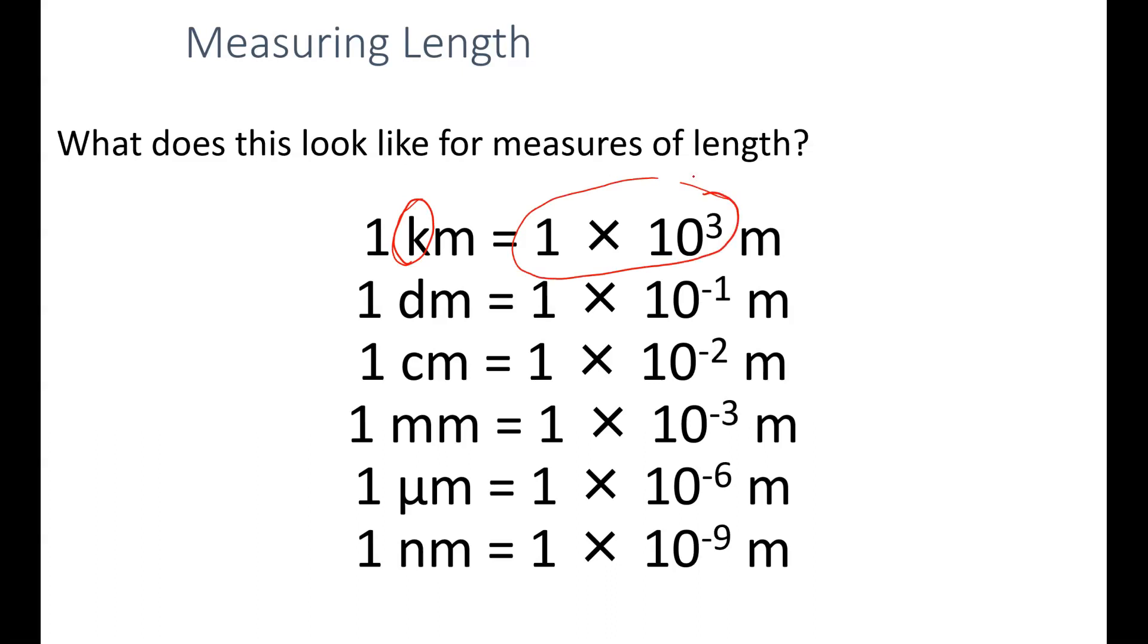This is somewhat like how a compound word works, like a doghouse is a house for a dog. We want to determine what does each of these prefixes mean numerically. Deci, 1 times 10 to the negative 1st, centi, 1 times 10 to the negative 2nd, and so on. This provides a consistent way of approaching these measures.